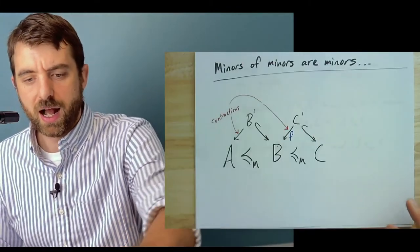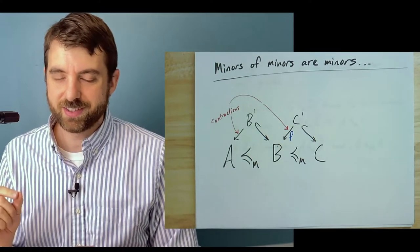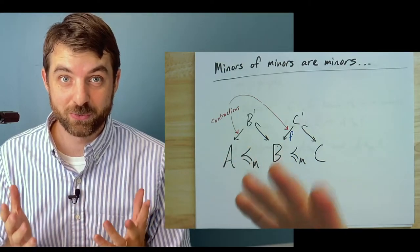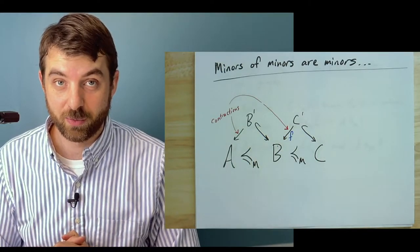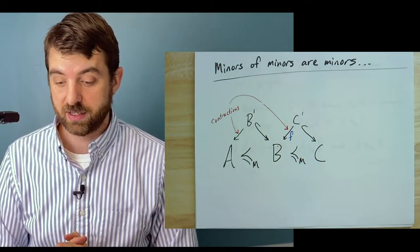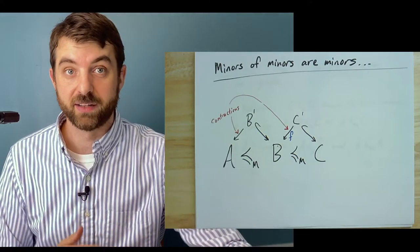Now, I've used this notation of a partial order. And the first, well, it's not the first, but one of the early steps you'd want to prove in order to show that it was a partial order was to show that it's transitive. That, you know, if I take a minor of a minor, that that will also be a minor. And we'll prove that here.